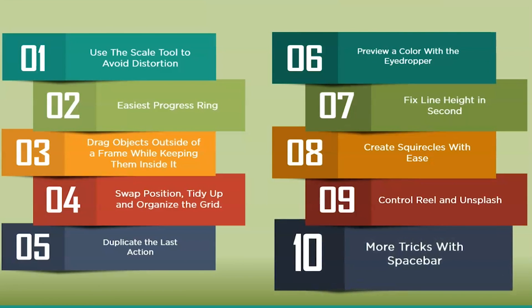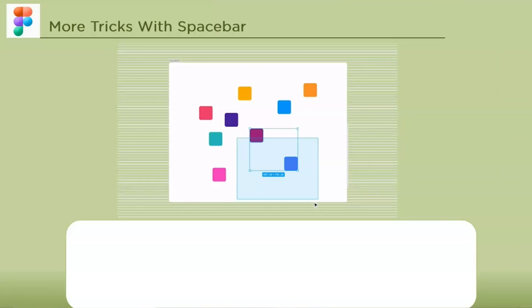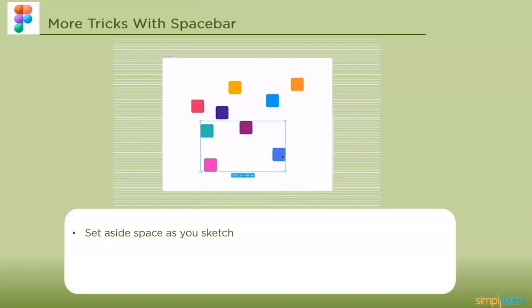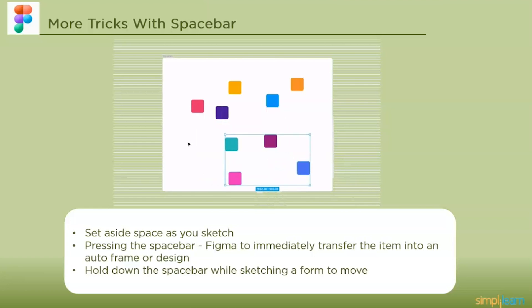The last one is more tricks with the spacebar. You may also set aside space as you sketch a form so that you can reposition the object afterwards. Pressing the spacebar will cause Figma to immediately transfer the item into an auto frame or design if it is sufficient and can be used in place of nesting. A spacebar is a great tool. To expand the selection size of your pointer, drag a selection region and then hold down the spacebar. You may also hold down the spacebar while sketching a form to move the items around. In addition, you may also use the spacebar to prevent Figma from automatically nesting items inside frames.